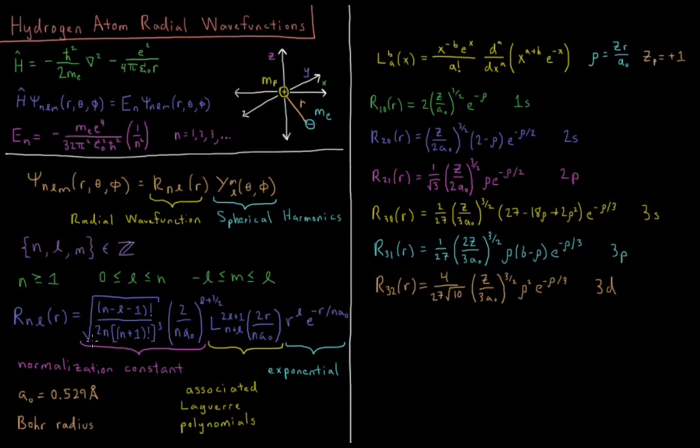First we have the normalization constant. We have the square root of n minus l minus 1 quantity factorial, over 2n times n plus l factorial quantity cubed. Then we have times 2n over a0 quantity to the power l plus 3 halves.